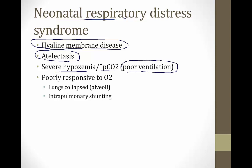It's difficult to treat these children because when you administer O2, it all goes to the healthy alveoli — the sick alveoli are collapsed. This is called intrapulmonary shunting, which is discussed in more detail in another module.